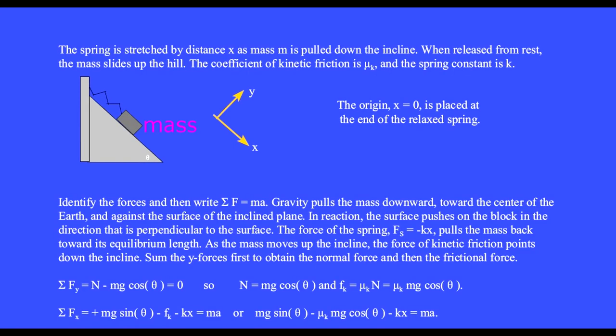This spring is tied to the wall and to the mass. The spring is stretched by distance x as mass m is pulled down the incline. When released from rest, the mass slides up the hill. The coefficient of kinetic friction is mu k and the spring constant is k.